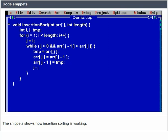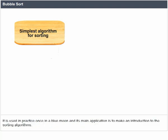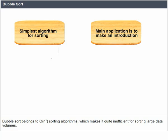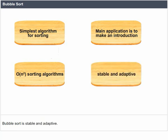Bubble Sort is one of the simplest sorting algorithms. It is used in practice once in a blue moon and its main application is to introduce sorting algorithms. Bubble Sort belongs to O(n²) sorting algorithms, which makes it quite inefficient for sorting large data volumes. Bubble Sort is stable and adaptive.